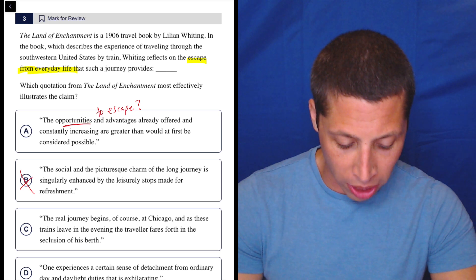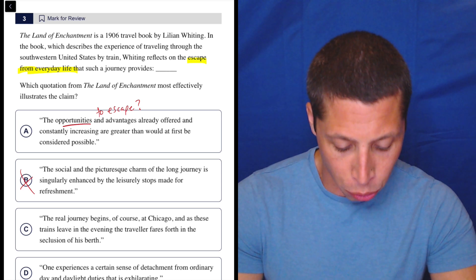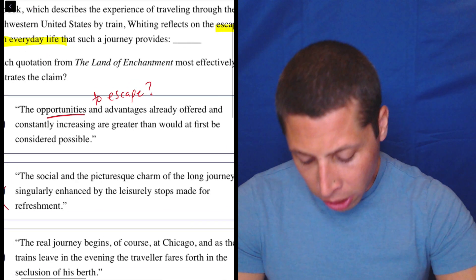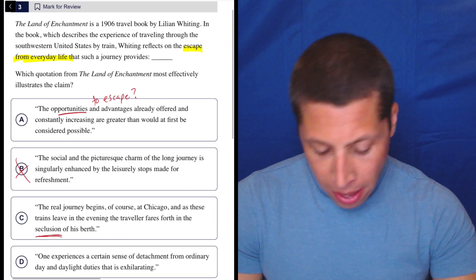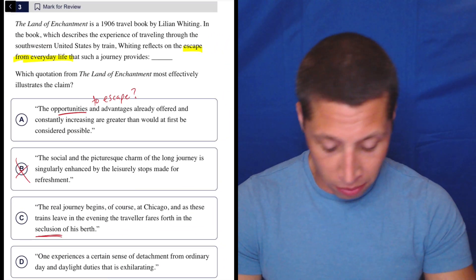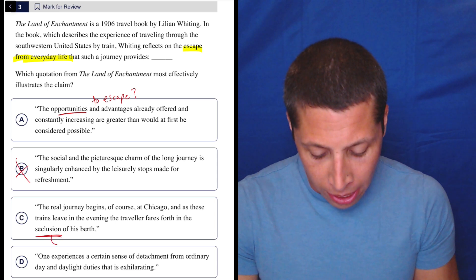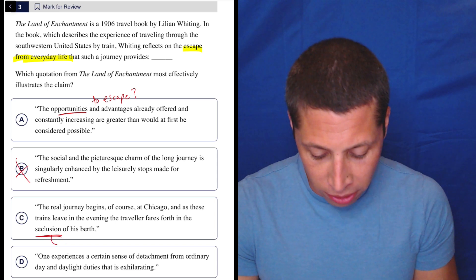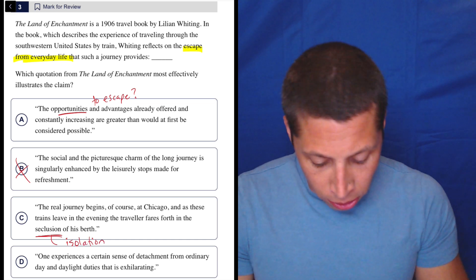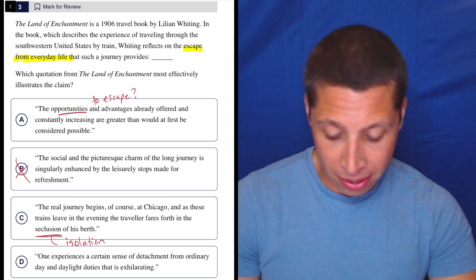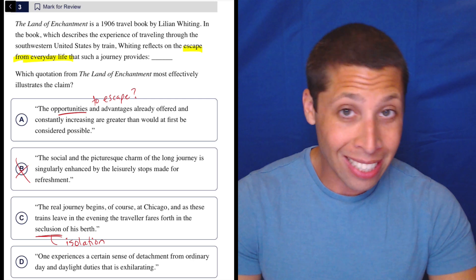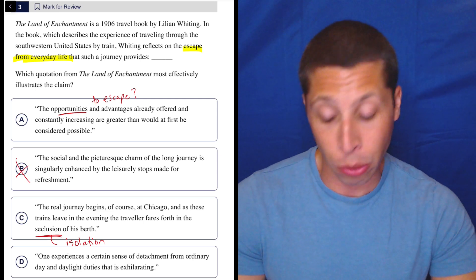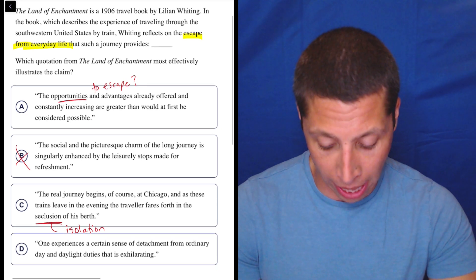C. The real journey begins, of course, at Chicago. And as these trains leave in the evening, the traveler fares forth in the seclusion of his birth. So seclusion, seclusion is definitely a word that relates to escape. If something is secluded, it's kind of like on its own. So the seclusion is kind of like the isolation. So I don't know what we're talking about here. Maybe that's escape. Again, it doesn't strike me as obviously a match and I'd really like it to. So I'd probably leave it in and then go to D and see what we get.